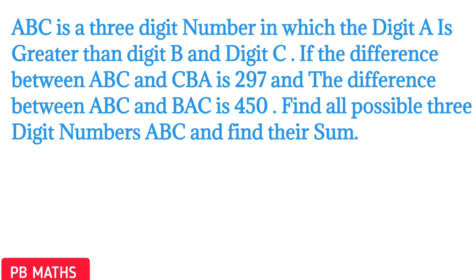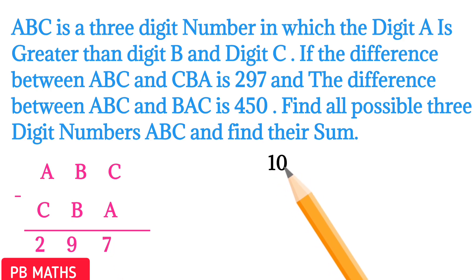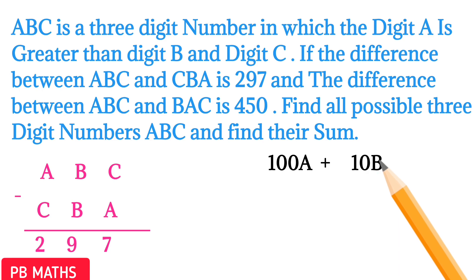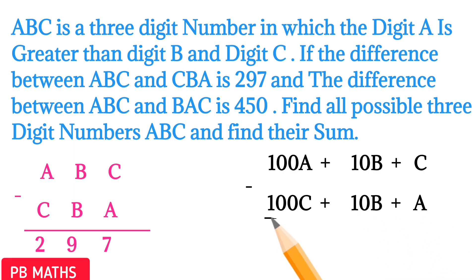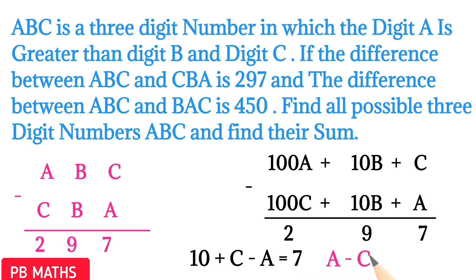It is given that ABC minus CBA equals 297. In ABC, A is in the 100th place, B is in the 10th place, and C is in the 1's place. Writing according to their places: 100A + 10B + C minus (100C + 10B + A) equals 297. Since A is greater than C, there must be a carry in the units place, so 10 + C minus A gives 7, which results in A minus C equals 3. Let's call this equation 1.